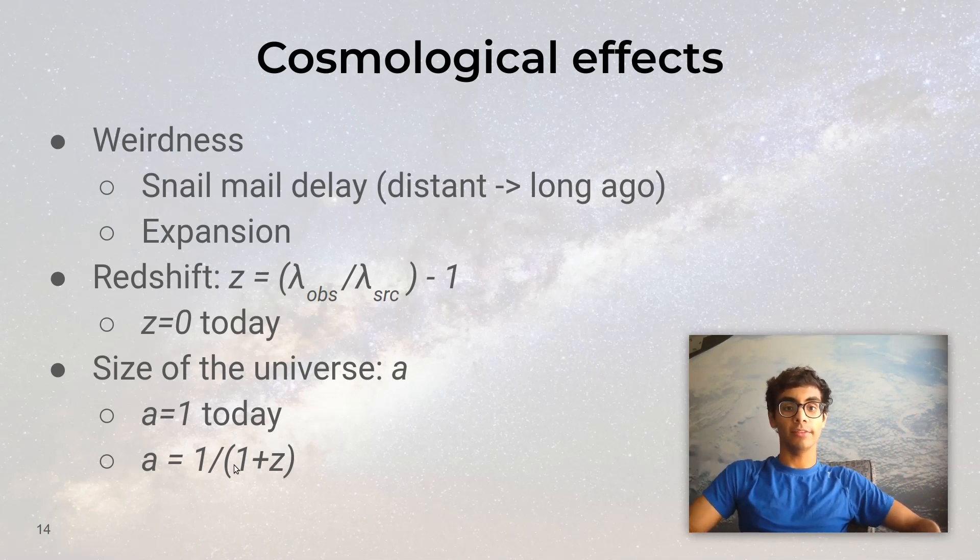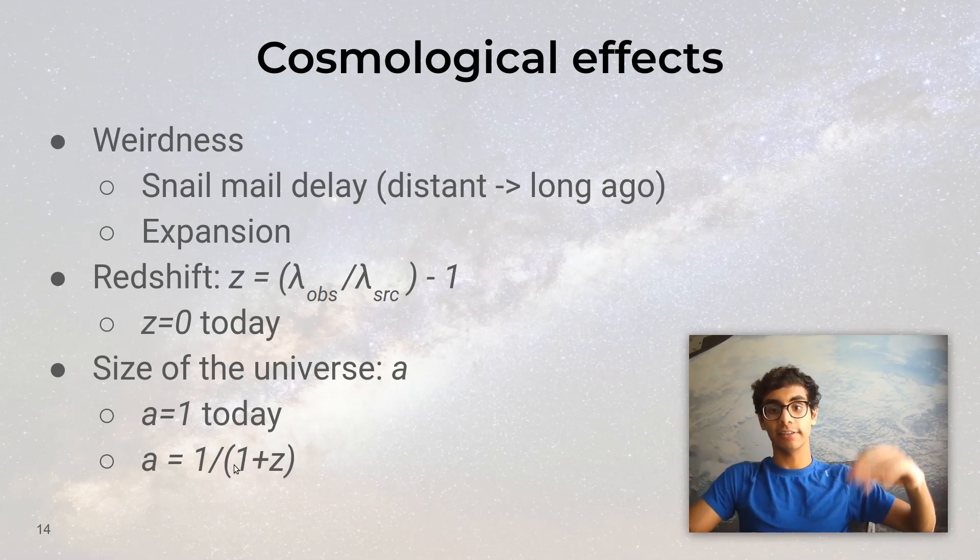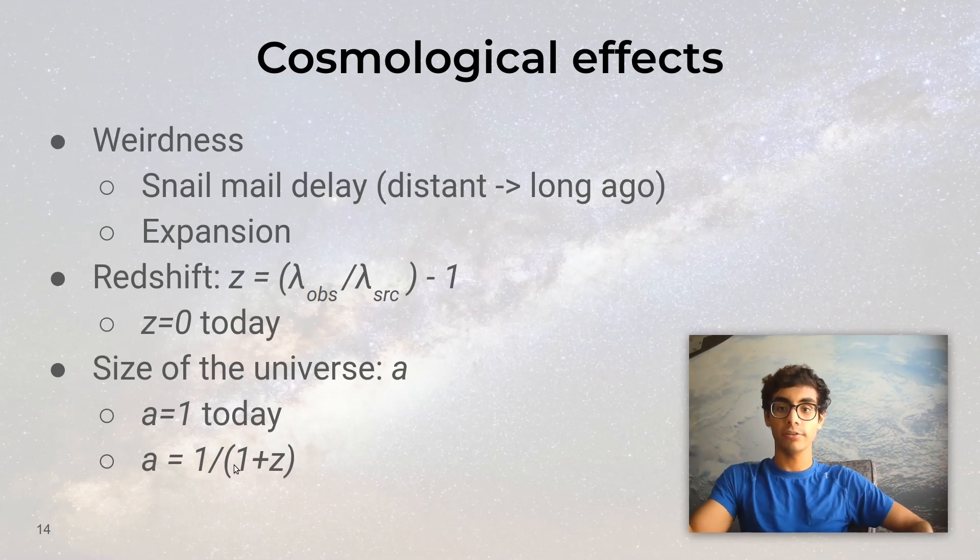As expected, when the redshift increases, the scale factor decreases in the denominator. This basically tells us that high redshift objects correspond to light that was emitted when the universe was very small.